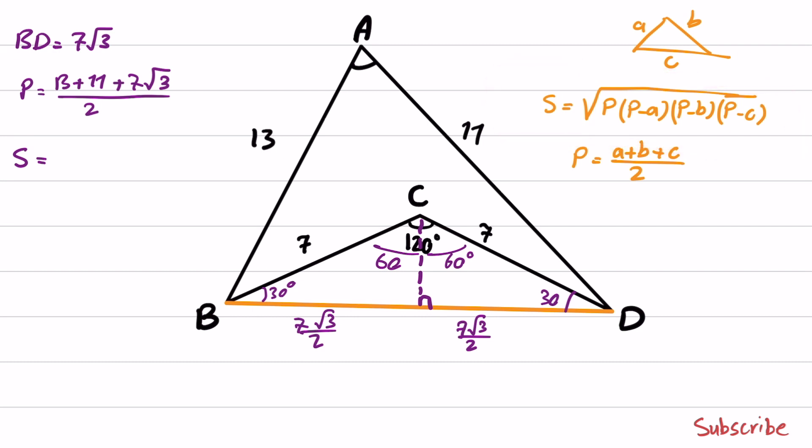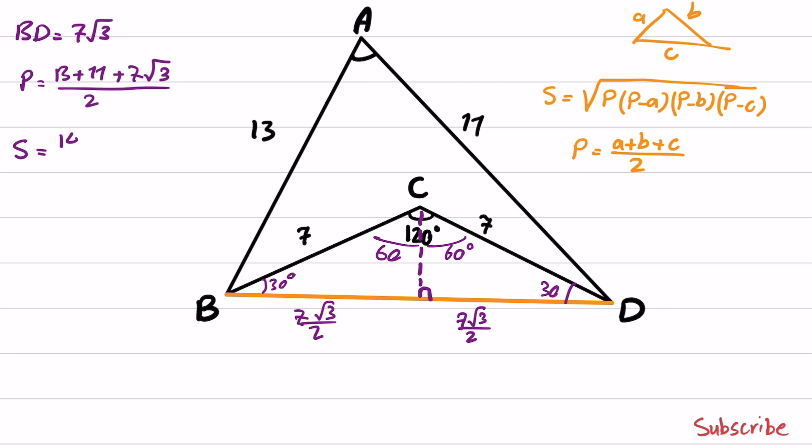the area is obtained as 143 square root of 3 divided by 4. This is the area of triangle ABD.